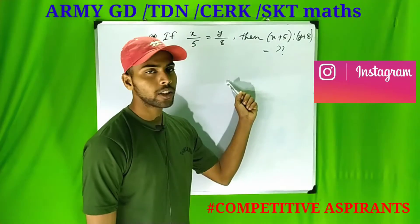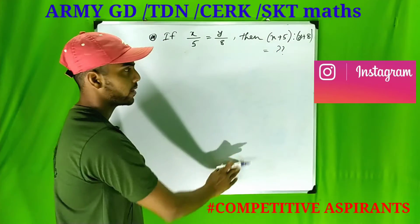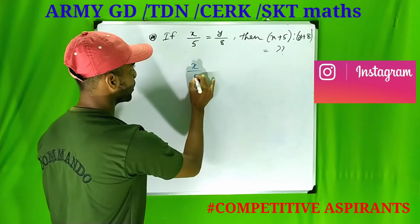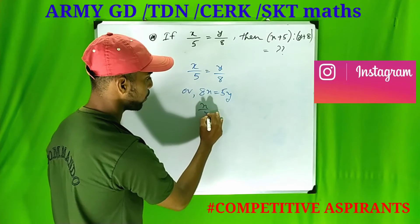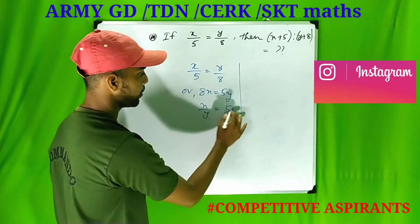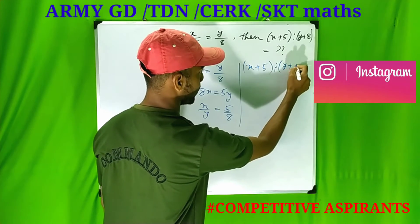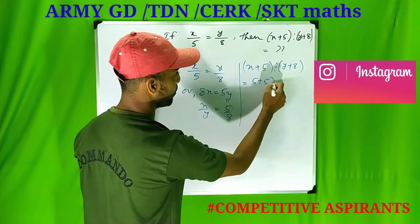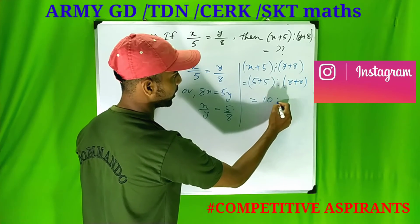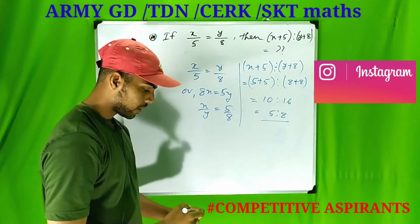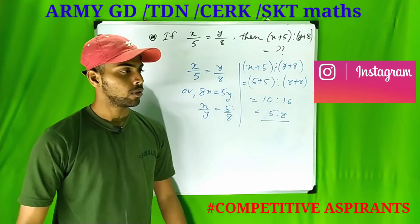The value of a to c is x by 5 equals to y by 8. Then, x plus 5 is to y plus 8. So, x plus 5 is to y plus 8 equals to 5 is to 8.